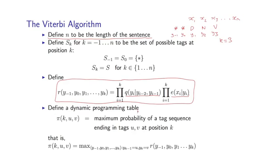Now we're going to define a dynamic programming table. So pi k u v is going to be the maximum probability of a tag sequence ending in tags u v at position k. Actually, to be completely precise, we need a couple of other definitions. So I'm going to define s sub k for k equals minus 1 to n to be the set of possible tags at each position k.